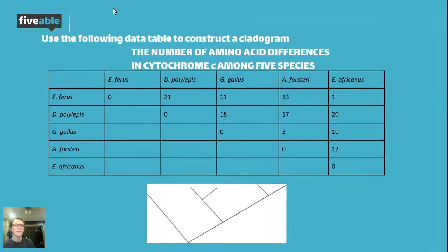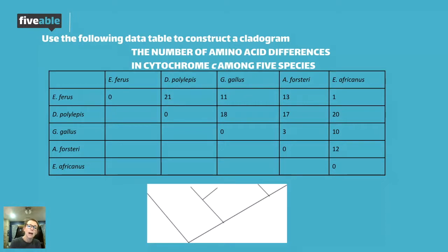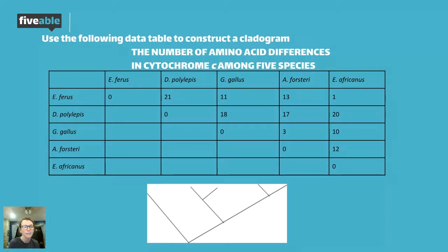This is an actual AP question. It says to use the following data table to construct a cladogram or phylogenetic tree. The title says 'the number of amino acid differences in cytochrome c amongst five species.' When looking for how commonly related species are, we can look at morphology — how something looks — or amino acid and DNA data. Amino acid or DNA data is better because it's more accurate than appearance, which can be deceiving due to convergent evolution.